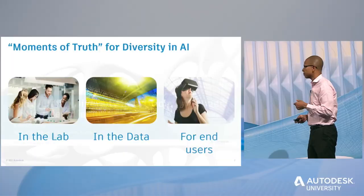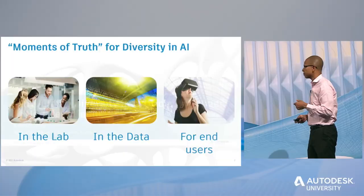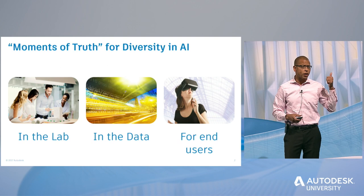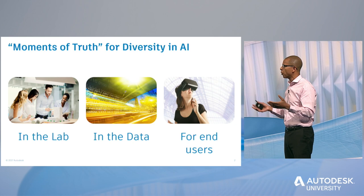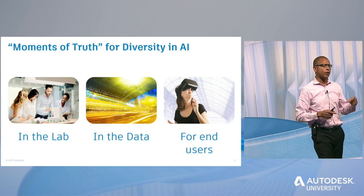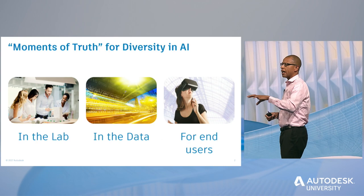When we think about where there are opportunities to integrate diversity into the work around artificial intelligence, there are really three main areas. One is in the lab — the people who work on things together. The second is in the data, because machine learning and AI are powered by data — are we thinking about integrating diversity into the data sets we have? And the third place is the end user — who's actually using what we create with AI.